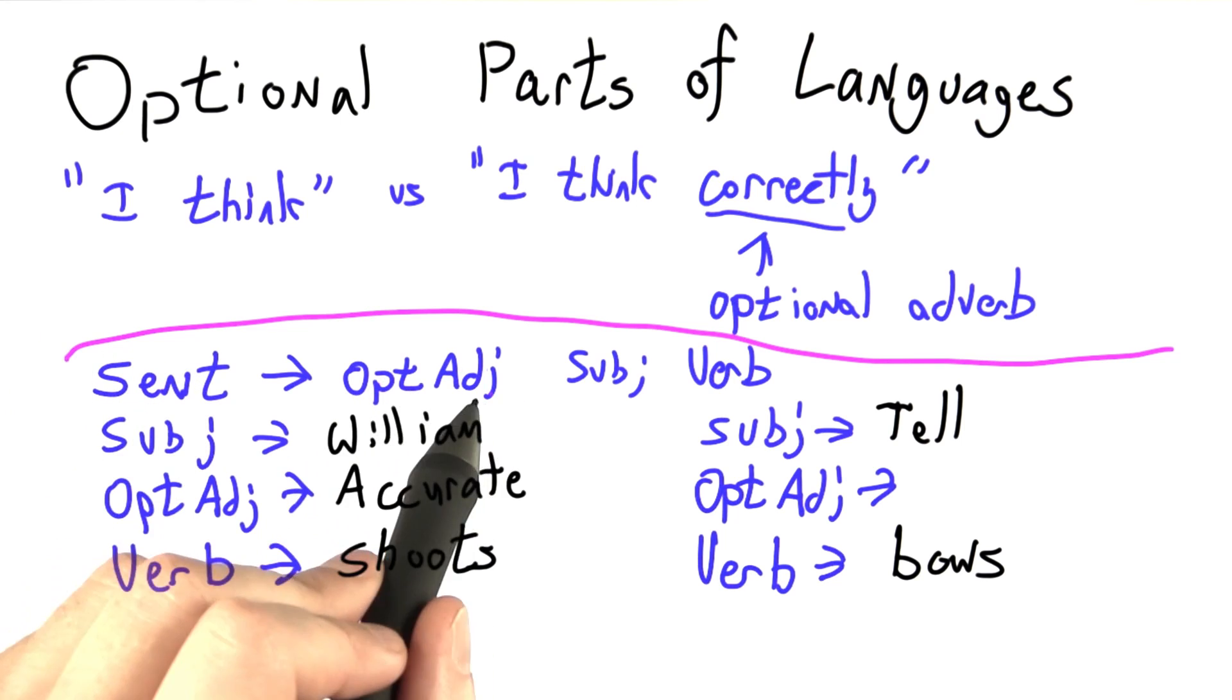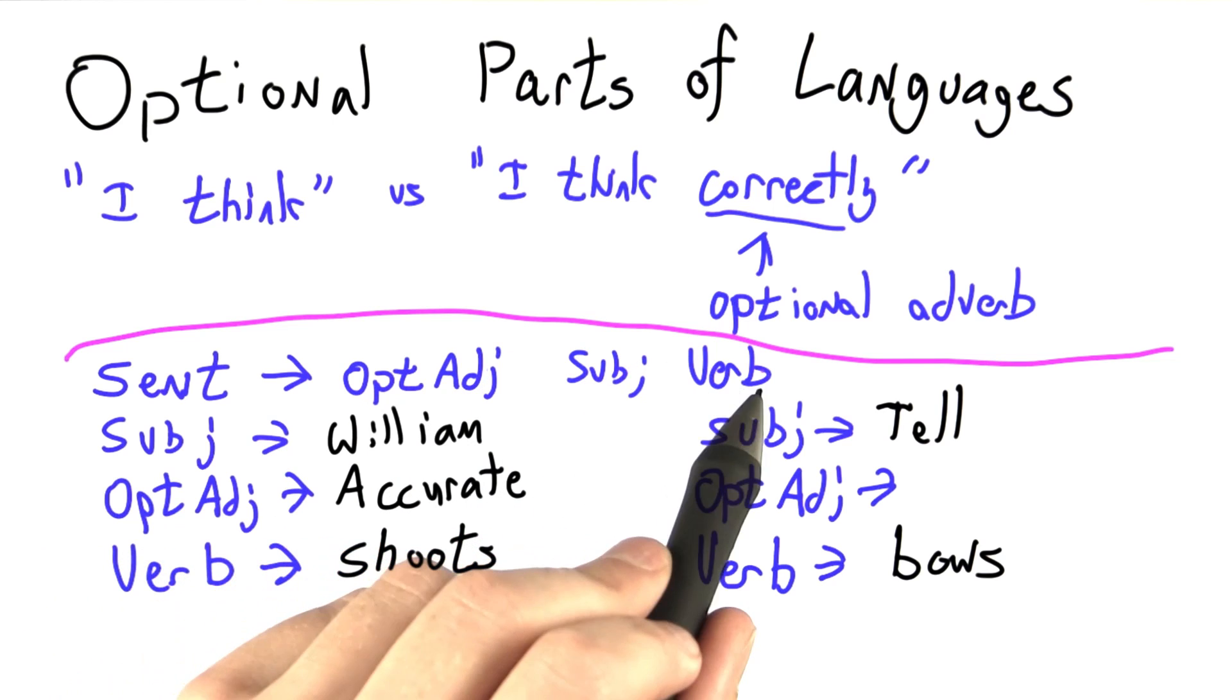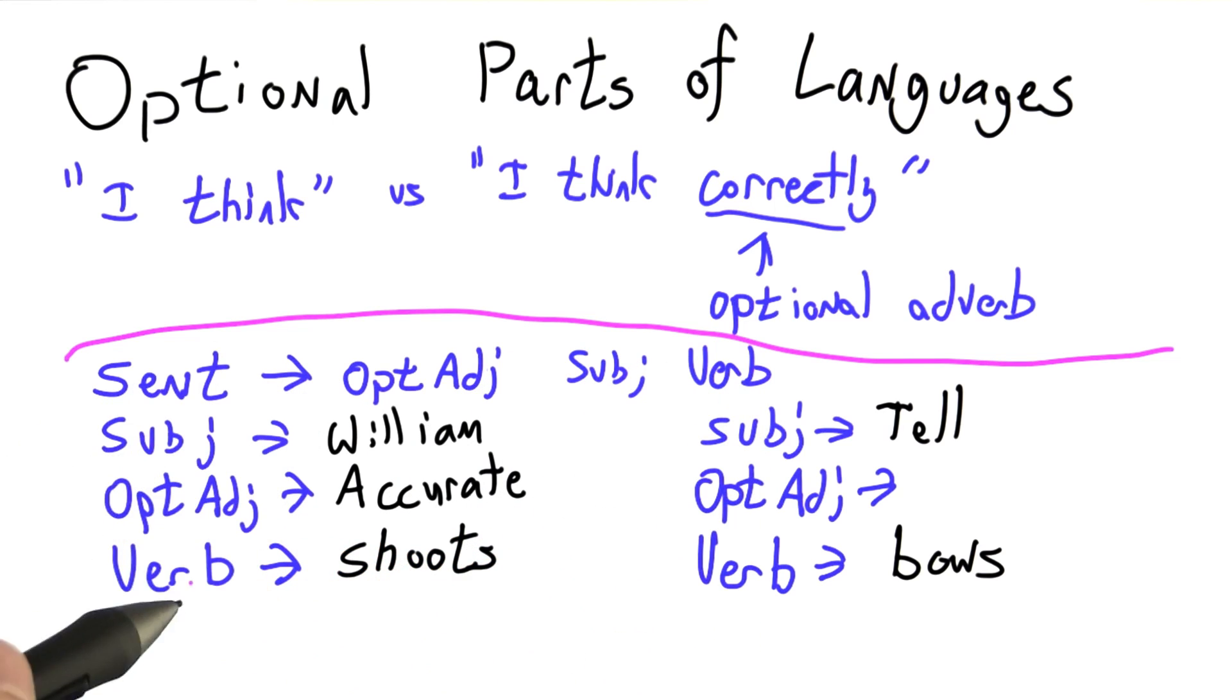Sentence goes to optional adjective, subject, verb. Subject and verb work a lot like they did before. This time our subjects are either william or tell, and our verb is either shoots or bows.